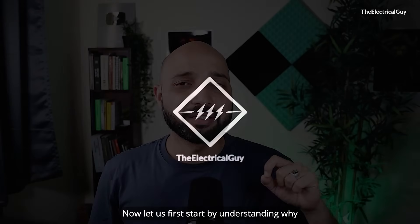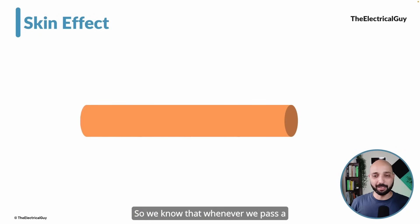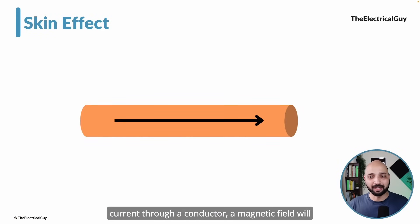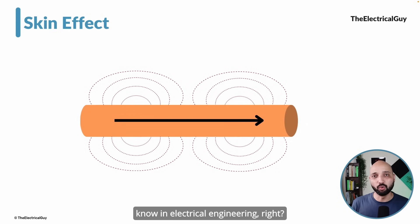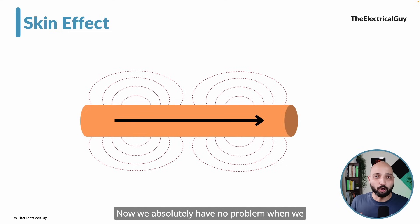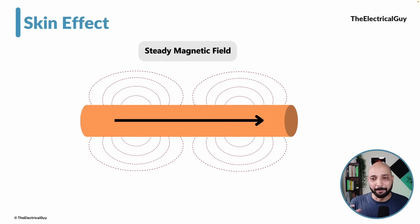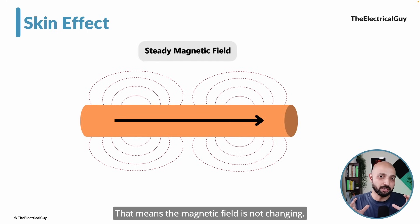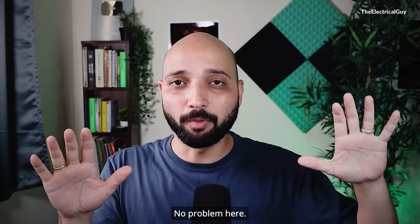Let us first start by understanding why this skin effect is generated. We know that whenever we pass a current through a conductor, a magnetic field will generate around it. That is the basic fundamental thing we know in electrical engineering. Now, we absolutely have no problem when we are passing a direct current or DC through this conductor, because that gives us a steady magnetic field — the magnetic field is not changing. The current is constant, and as a result, the magnetic field is also constant. No problem here.